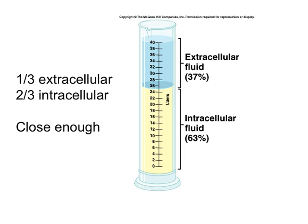Now we can take that water content and look at it in different ways. You can look at water contained inside cells and compare that to water found outside cells. Two-thirds of the total body water — that is two-thirds of that 50% for women or 60% for men — is found inside cells, and one-third is found outside cells. We call the water inside cells intracellular fluid and the water outside cells extracellular fluid.